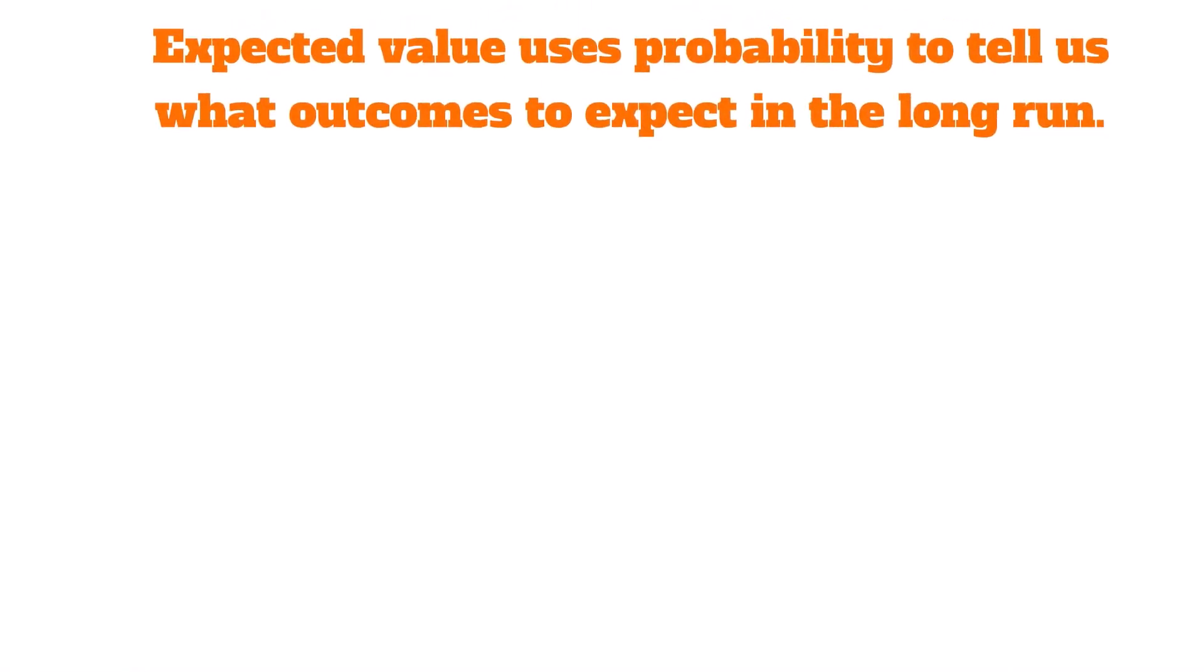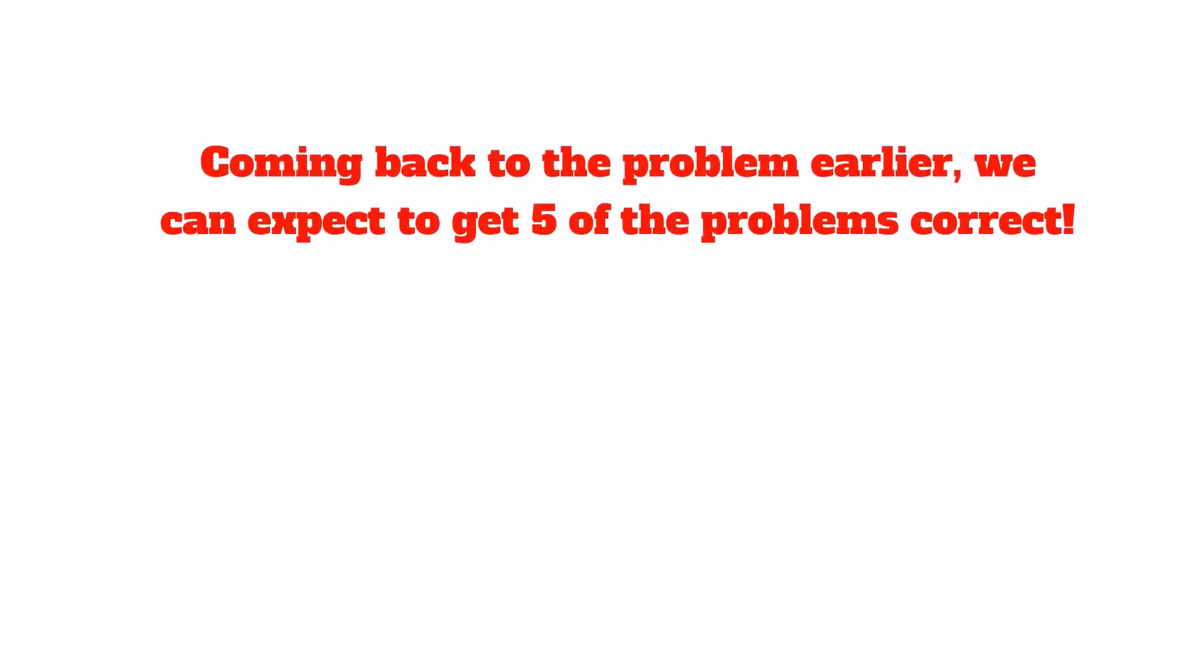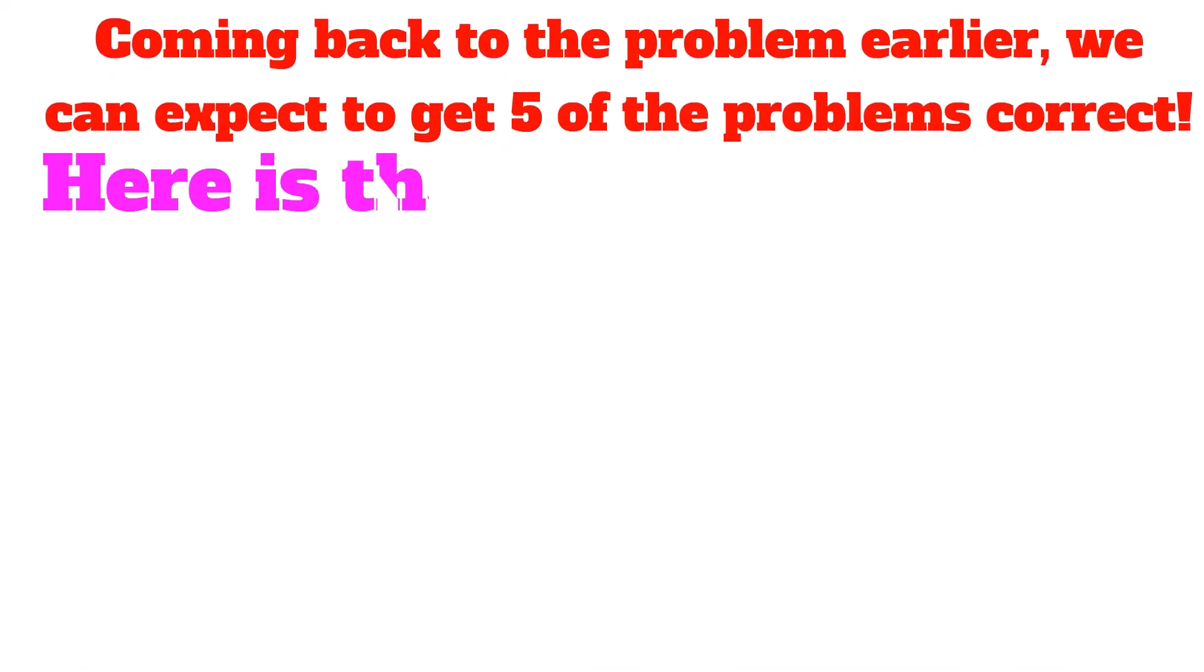Expected value uses probability to tell us what outcomes to expect in the long run. Coming back to the problem earlier, we can expect to get 5 of the problems correct. Here is the math behind this.